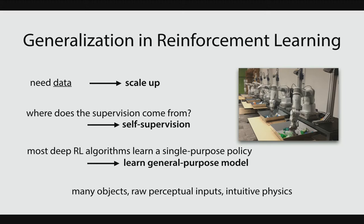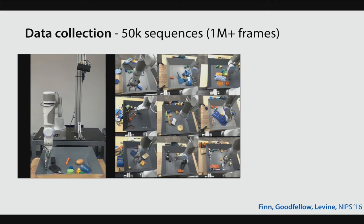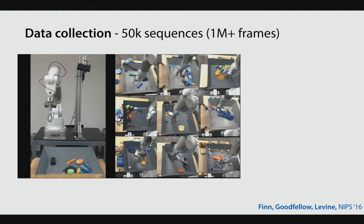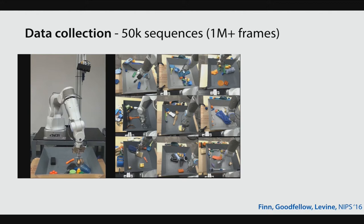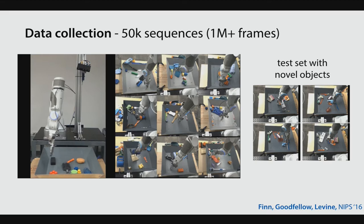We collected data on all of the robot arms by putting objects in front of the robot and pre-programming random motions — but random in a way that would encourage interesting, complex physical interactions with the world. We collected RGB videos along with the actions the robot was taking. We also collected a test set of novel objects the robot hadn't seen before, in order to evaluate how well the robot generalizes to new objects.